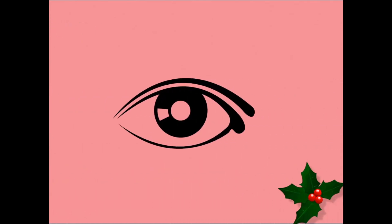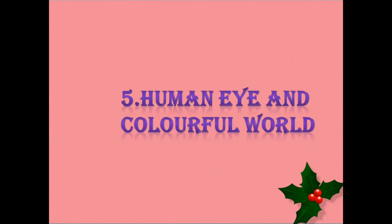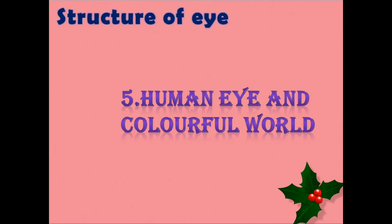The fifth chapter in physics is Human Eye and Colorful World. This is also one of the important chapters and you will get a lot of marks from it. First, the structure of the eye — learn the parts of the eye and you can write that easily. The diagram also — choose the correct diagram with the correct parts.